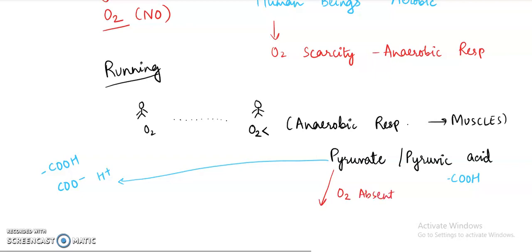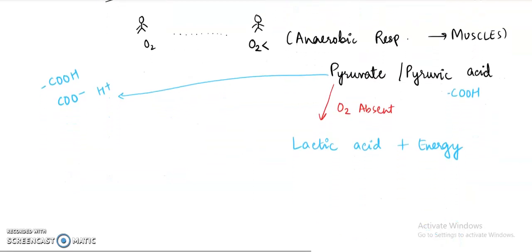So pyruvate that is formed in the cytoplasm of the cell, if anaerobic respiration is happening means oxygen is absent, then in this case we will get the end product as lactic acid and a little amount of energy in the form of ATP. So anaerobic respiration occurs in human beings whenever there is scarcity of oxygen in the muscles. At this time, lactic acid is formed.